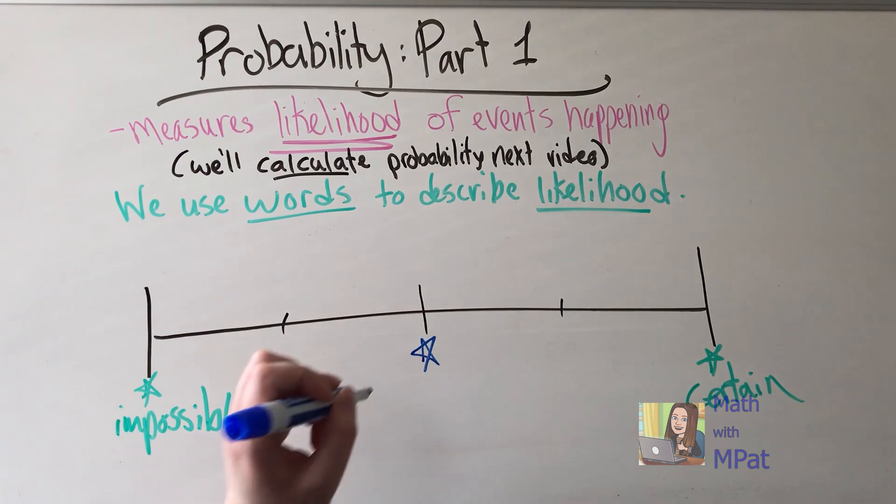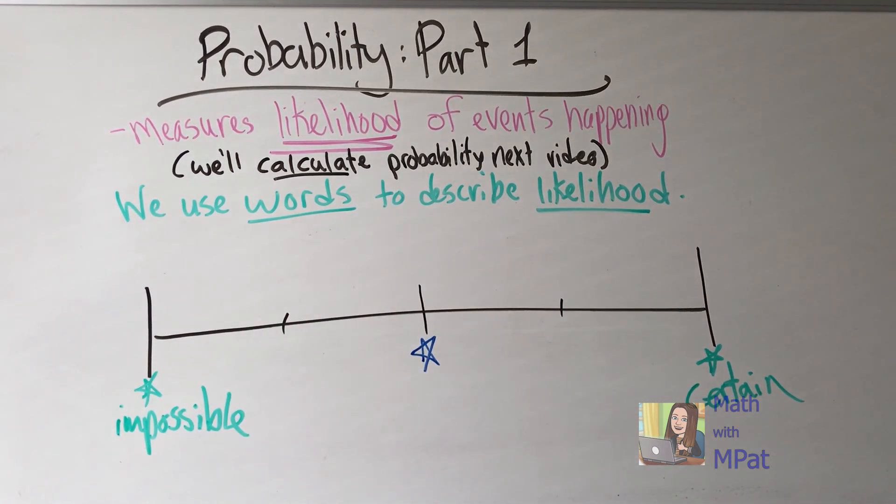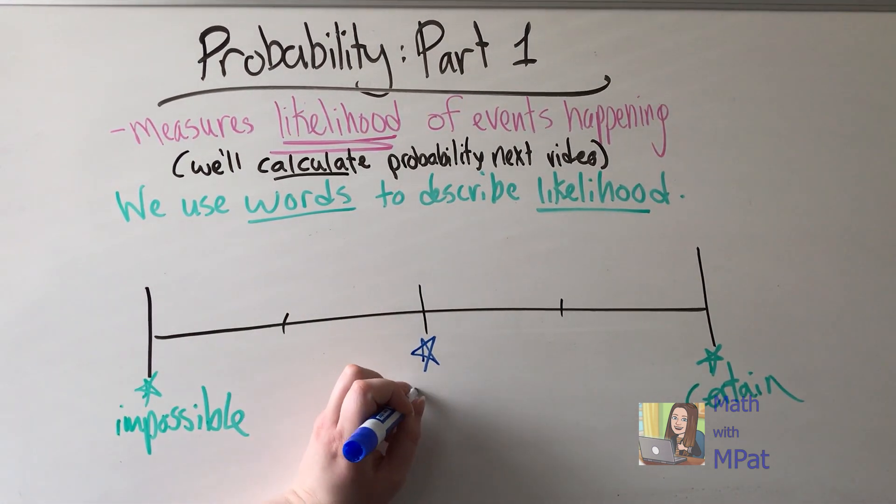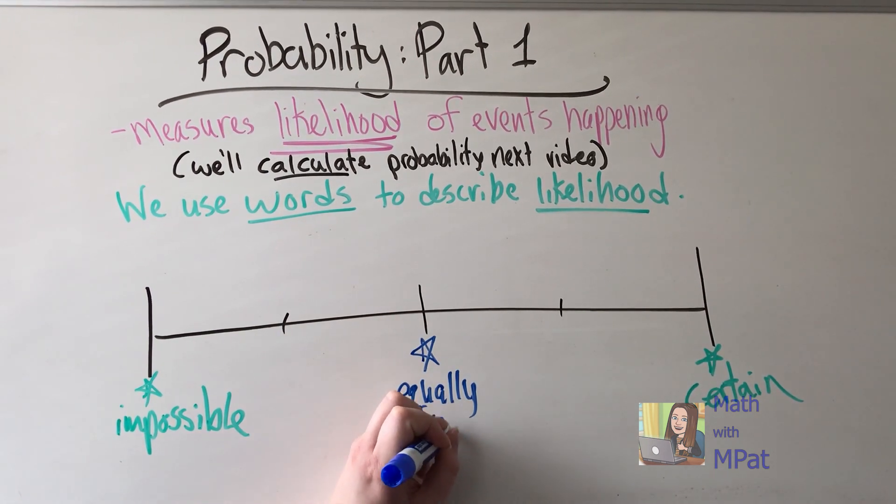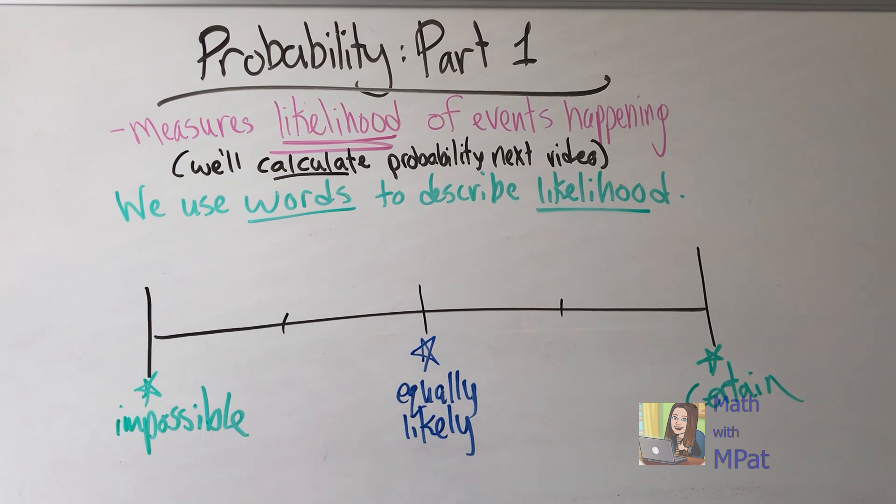In the middle here we describe events as equally likely. This means that there's an equal chance of the event happening and an equal chance that it will not happen. So it's equally likely. An example here would be flipping a coin. There is an equal chance that I will get heads and there's an equal chance that I will not get heads.